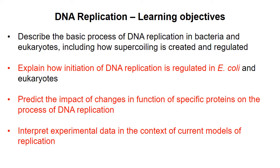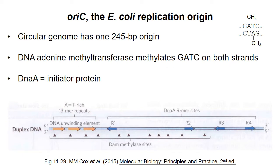In this video I'll briefly summarize how initiation of DNA replication occurs in E. coli and then talk about how the process is regulated such that initiation does not happen again until an appropriate time. E. coli has a relatively small circular genome of about 4.6 million base pairs and a single replication origin. The origin contains several AT-rich repeats where unwinding occurs during initiation. Adjacent to that it contains several binding sites for the initiator protein DNAa.